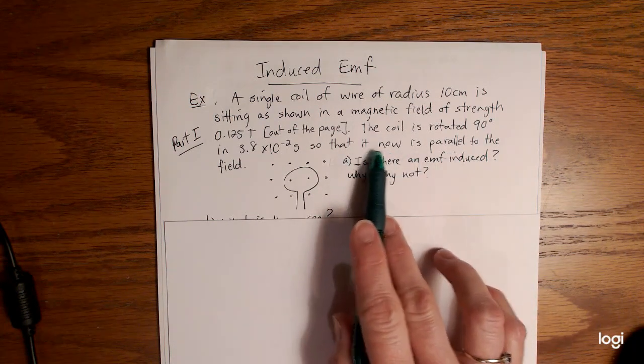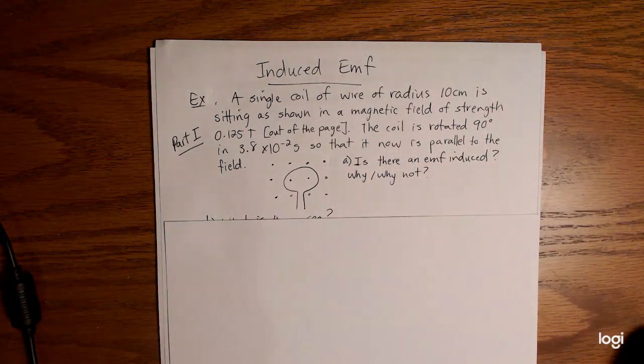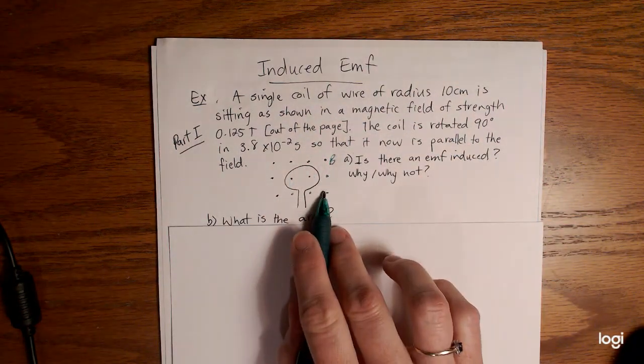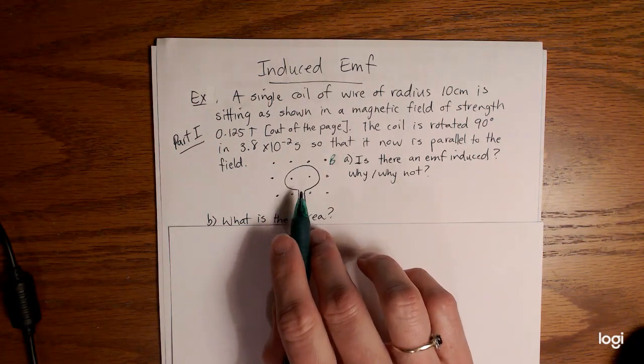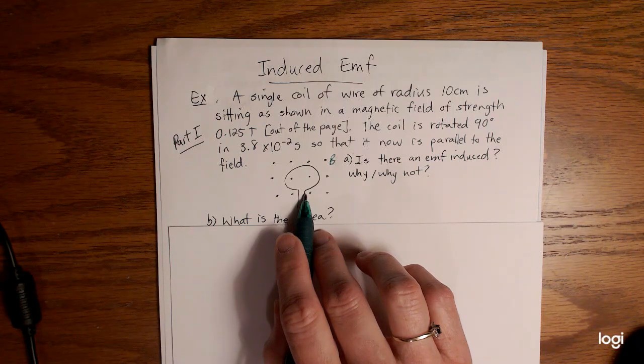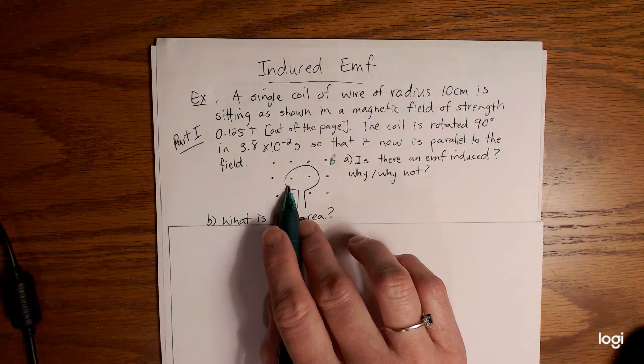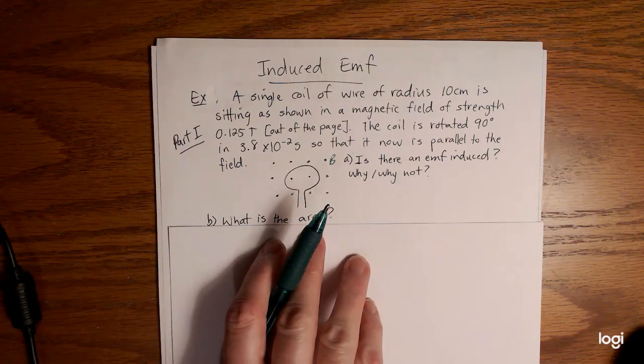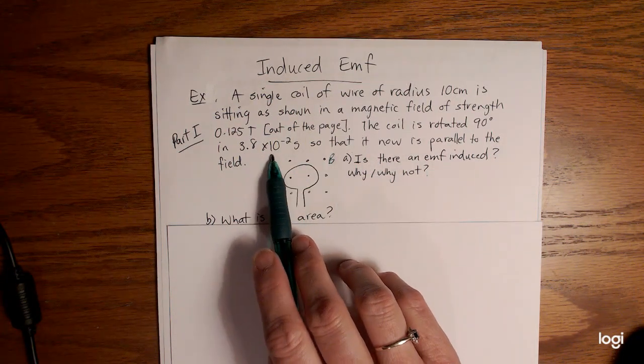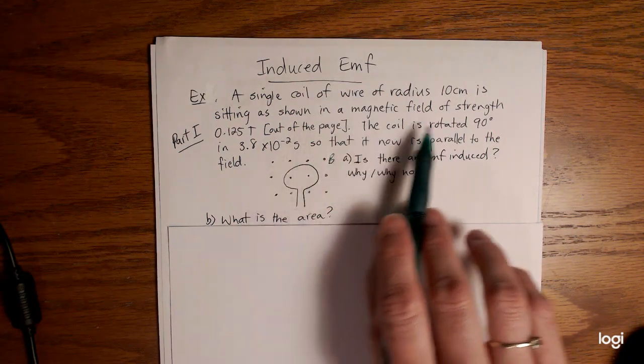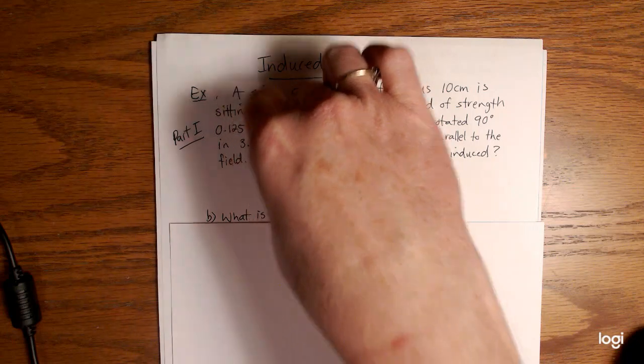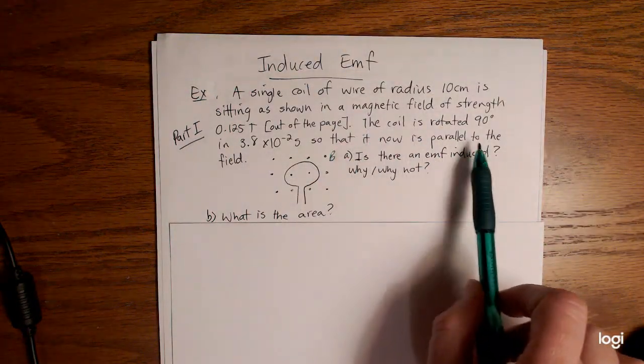So it starts off in this orientation. Here's our magnetic field coming out of the page. We have the coil at rest initially. Less than a minute, 3.8 times 10 to the negative 2 seconds later, the coil will be rotated 90 degrees. That means the circle that was sitting that way will now be sitting this way, so is now parallel to the field.